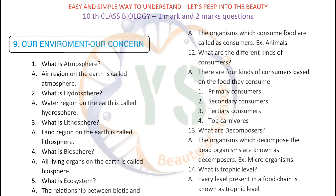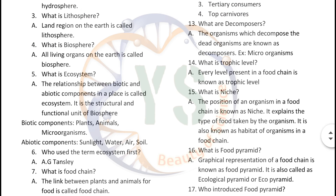What are decomposers? The organisms which decompose the dead organisms are known as decomposers. They are also called recyclers. For example, microorganisms. What is trophic level? Every level present in a food chain is known as trophic level. What is niche? The position of an organism in a food chain is known as niche. It explains the type of food taken by the organism, and is also known as the habitat of organisms in a food chain.